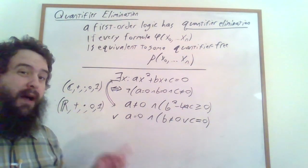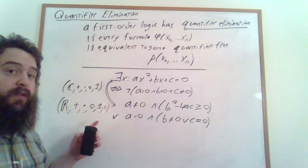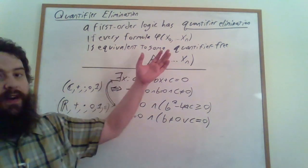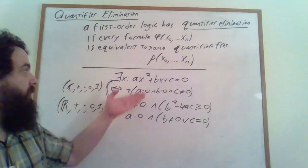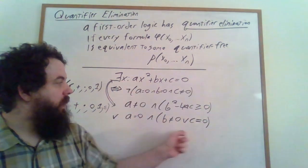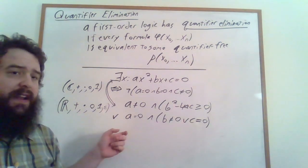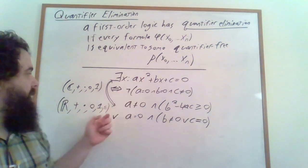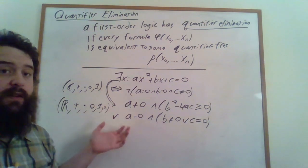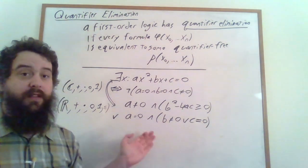But we can modify it by adding in the less than or equal to relation, and then suddenly, maybe it does have quantifier elimination. Certainly, this formula can be translated into an equivalent formula without any quantifiers. And it turns out that any formula in this particular first-order logic can be translated into an equivalent formula without quantifiers.